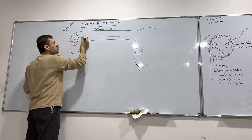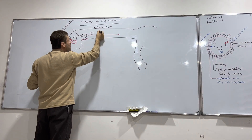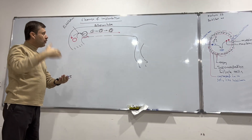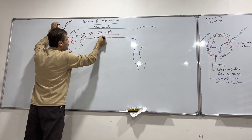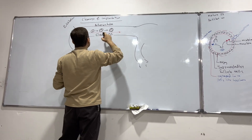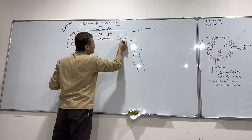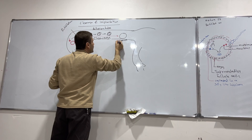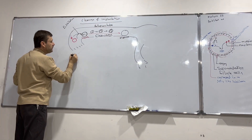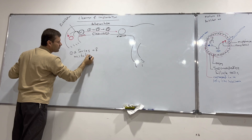What does cleavage mean? The zygote, which is 2N, begins a series of mitotic divisions. It becomes two cells, then four cells, then eight cells. This dividing process is called cleavage.